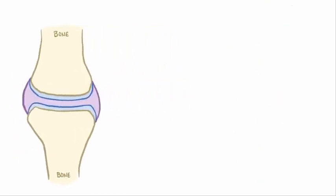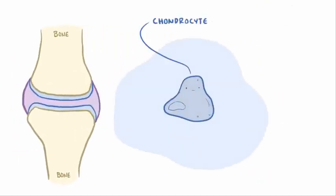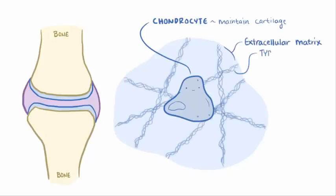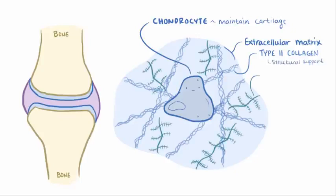Maintaining healthy articular cartilage is the chondrocyte's job, a specialized cell responsible for maintaining everything cartilage related. The chondrocytes produce and are embedded within a strong gel or extracellular matrix, which contains type 2 collagen, a protein that provides structural support, as well as proteoglycans.